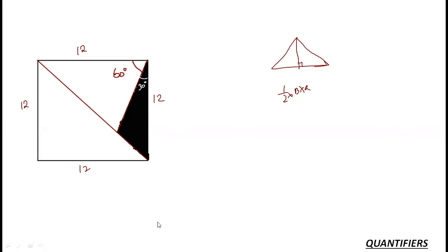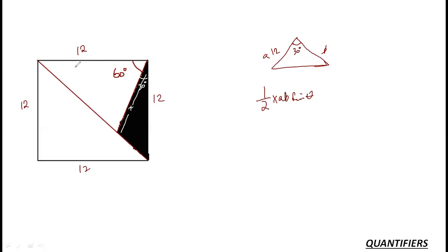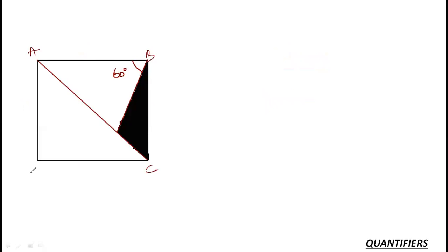The area of a triangle can also be derived as half × a × b × sin θ, where a and b are the sides and θ is the included angle. I know one side is 12 and one angle is 30°. Also, half of the total square area is 144 / 2 = 72. Let me label the relevant points A, B, C, and E to work with the triangles formed.